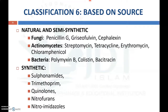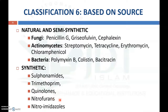The sixth classification is based on the source of antibiotics — natural, semisynthetic, or synthetic. Natural antibiotics from fungi include penicillin G, griseofulvin, and cephalexin; from actinomycetes include streptomycin, tetracycline, erythromycin, and chloramphenicol; from bacteria include polymyxin B, colistin, and bacitracin. Synthetic antimicrobial agents include sulfonamides, trimethoprim, quinolones, nitrofurans, and nitroimidazoles.